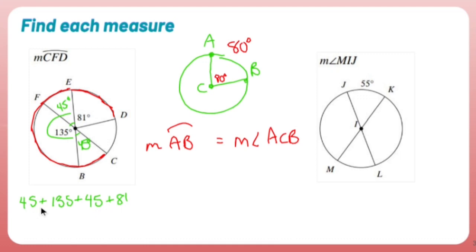So 45 plus 135 plus 45 plus 81 is 306. So the measure of angle CFD is 356 or 306. I kind of Freudian slipped. That's also true, that's very true. But what that means, and most importantly, is that the measure of arc CFD is 306.